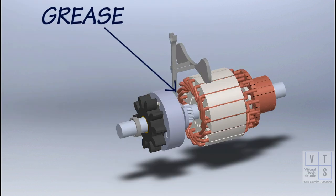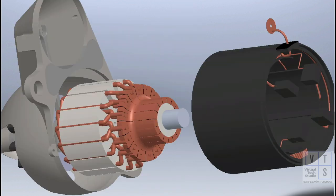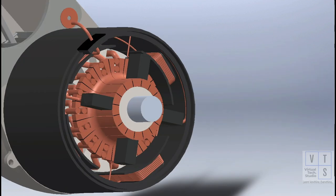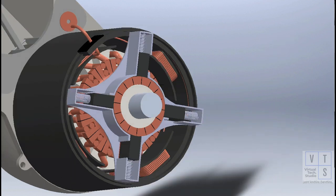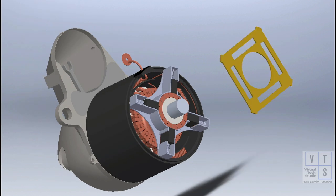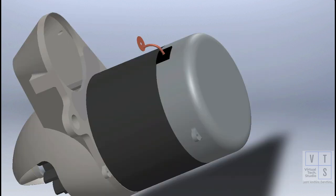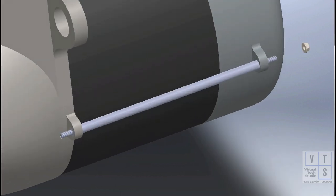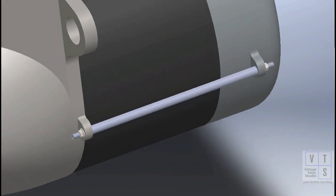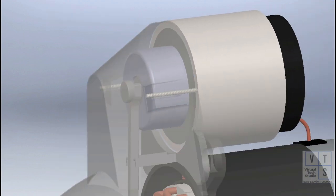Apply grease to drive lever. Then, apply grease to front housing brass bush. Apply grease to rear housing brass bush. Apply grease to the plunger of magnetic switch before installing.